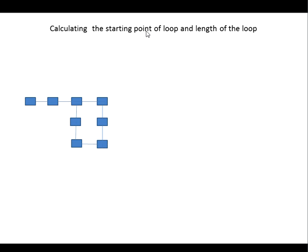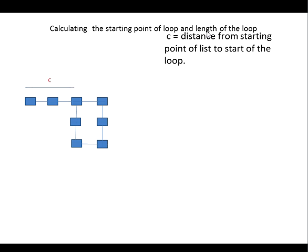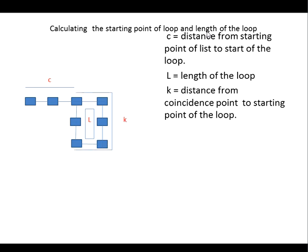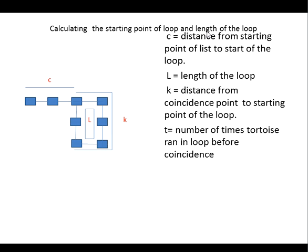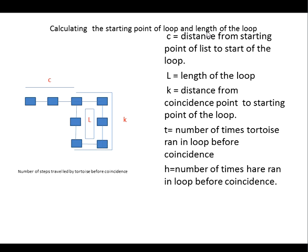Now let us calculate the starting point as well as the length of the loop. Let c be the distance from the starting point of the list to the start of the loop, l be the length of the loop, and k be the distance from the coincidence point to the starting point of the loop. Let t be the number of times the tortoise had to run in the loop before coincidence and h be the number of times the hare had to run in the loop before coincidence. The number of steps travelled by the tortoise before coincidence will be s, which is the sum of c steps from the starting point to the start of the loop, plus t times the loop length, plus k steps from the starting point of the loop to the coincidence point.